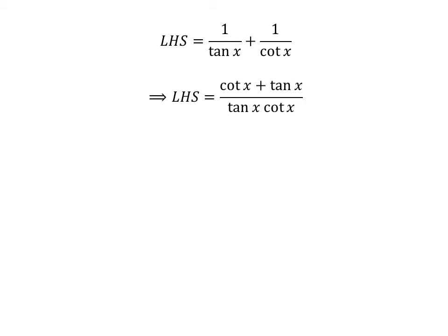Addition of the fractions gives us left hand side of the identity is equal to cotangent of x plus tangent of x upon tangent of x times cotangent of x.